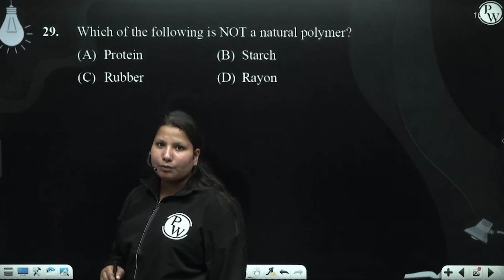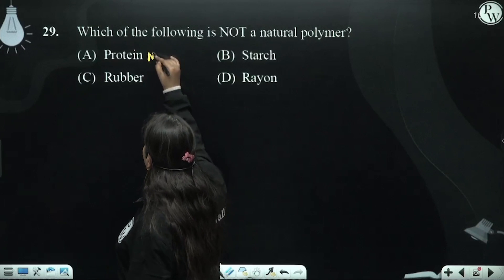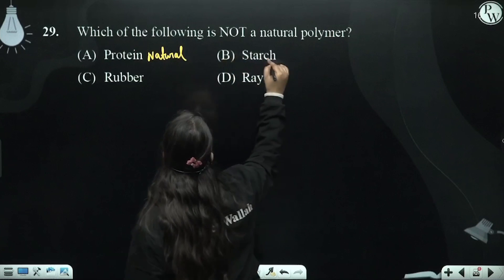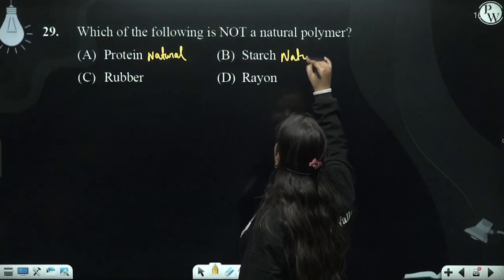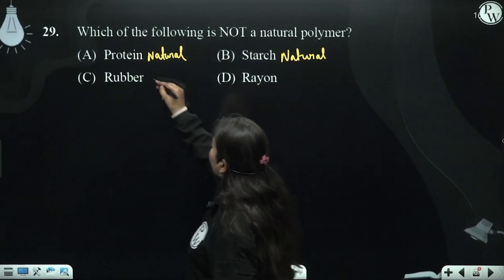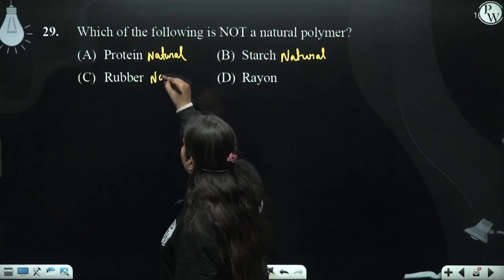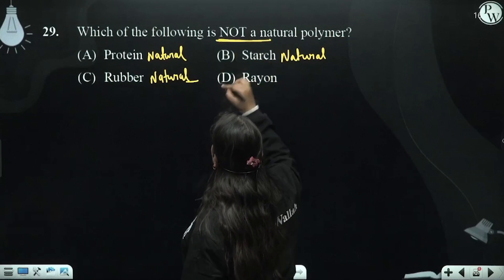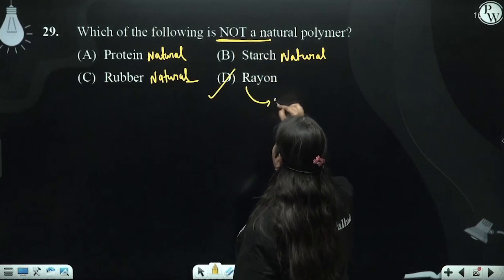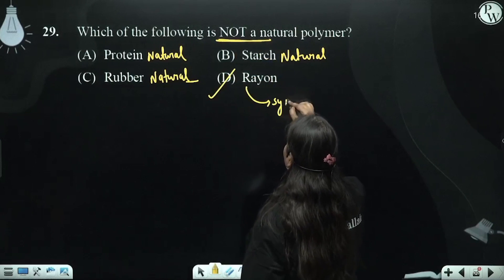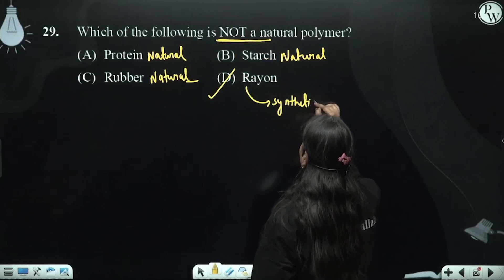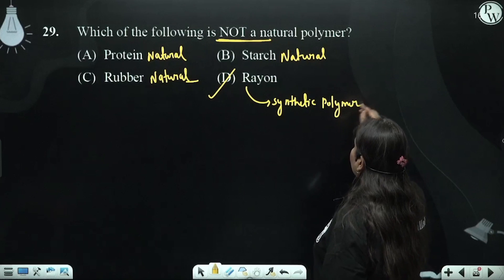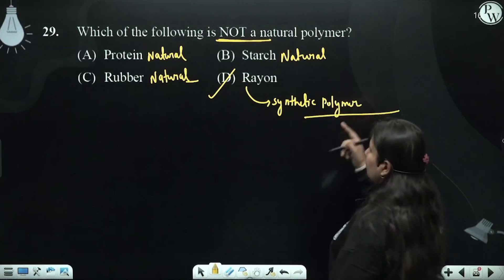So what is a natural polymer? These three are natural polymers. The question asks which is NOT a natural polymer — that would be the synthetic polymer, which we synthesize in the lab.